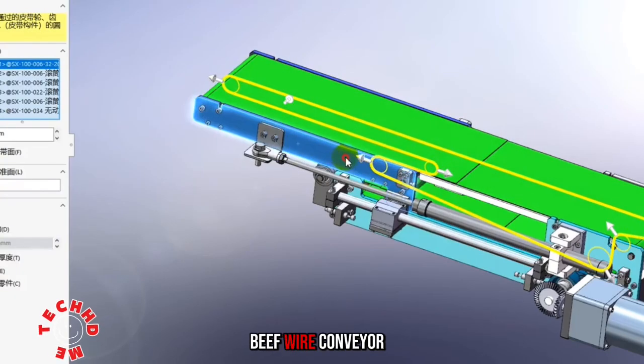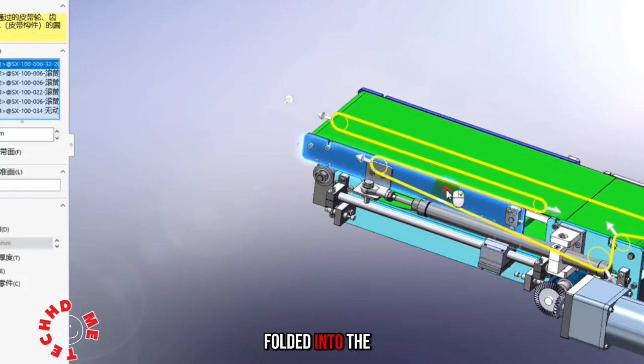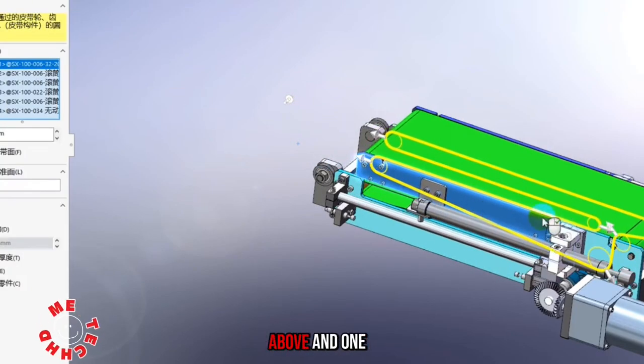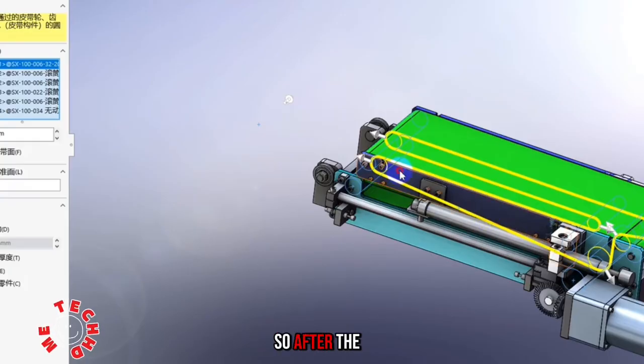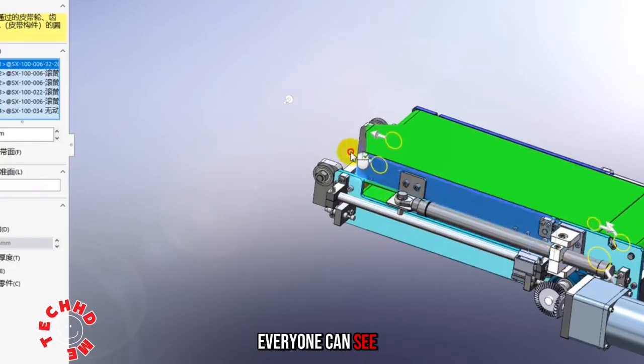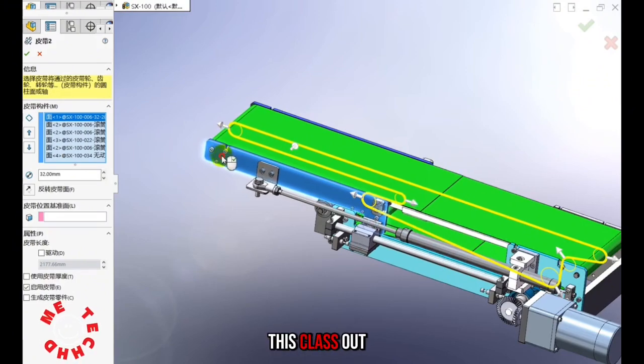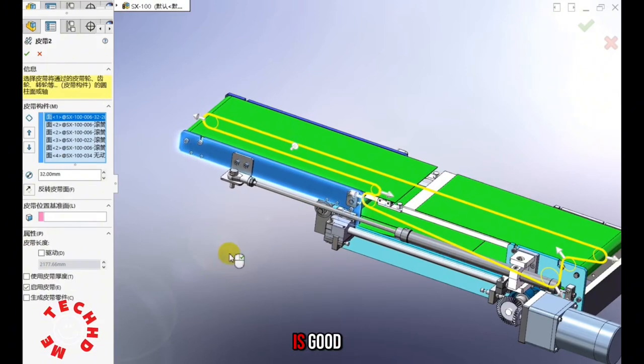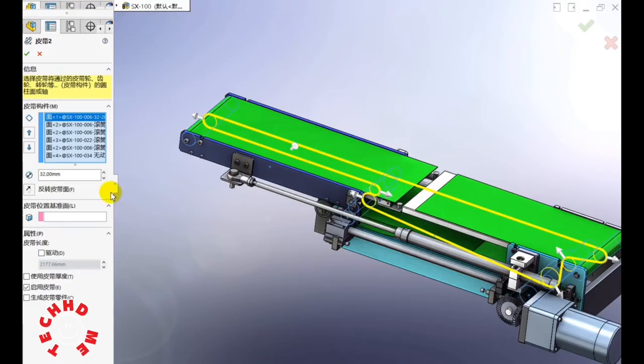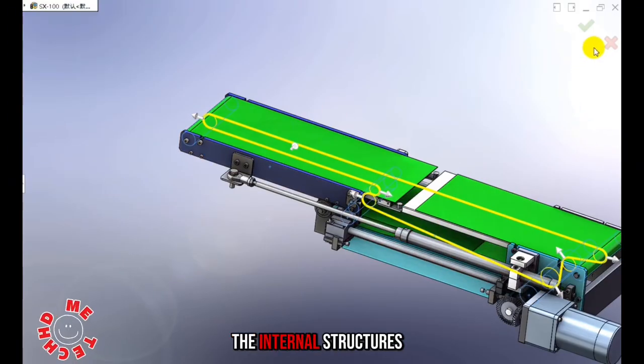The belt conveyor cabinet is folded into one floor above and one floor below. After launch, you can see the belt conveyor pushes out like this. Let's look at some of the internal structures.